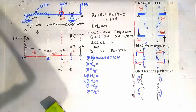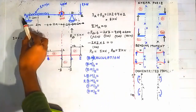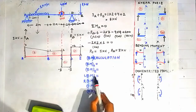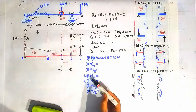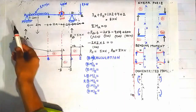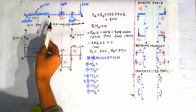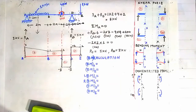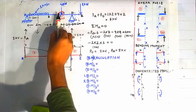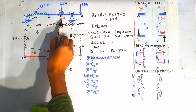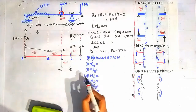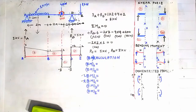Now we will draw the bending moment diagram. We need to find the bending moment at points A, B, C, D, and E. We must calculate on the left side and right side of point C separately because a concentrated moment of 2 kN acts there, causing the bending moment to change suddenly from the left side to the right side of point C.